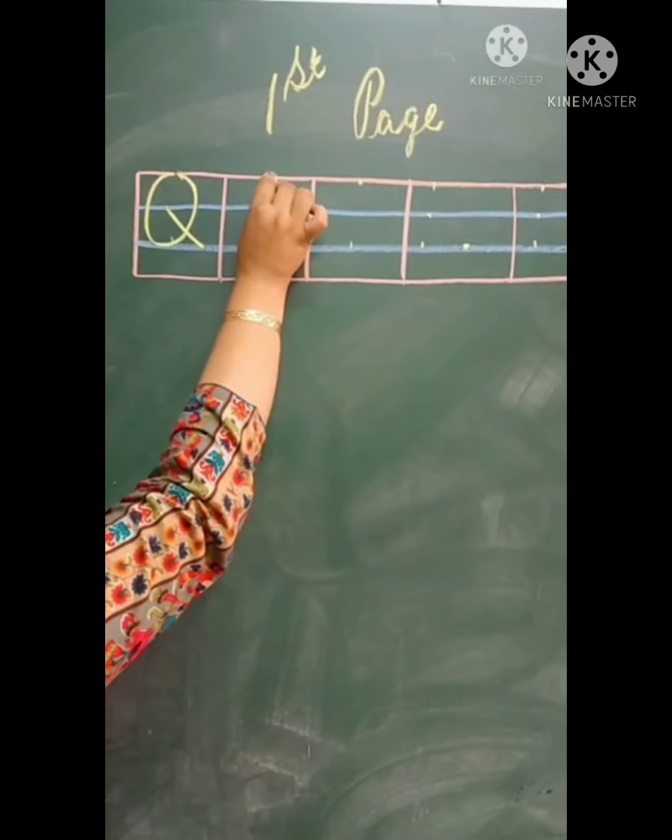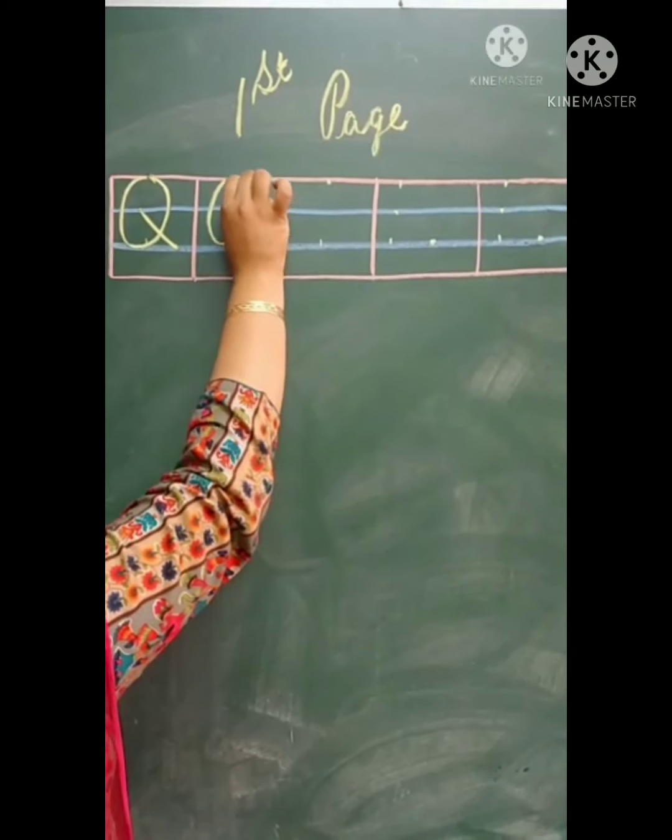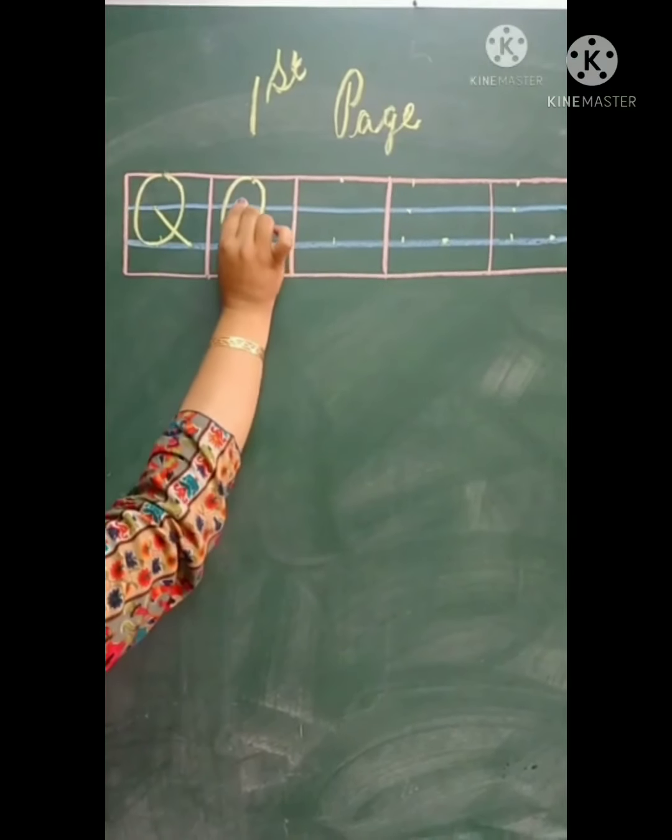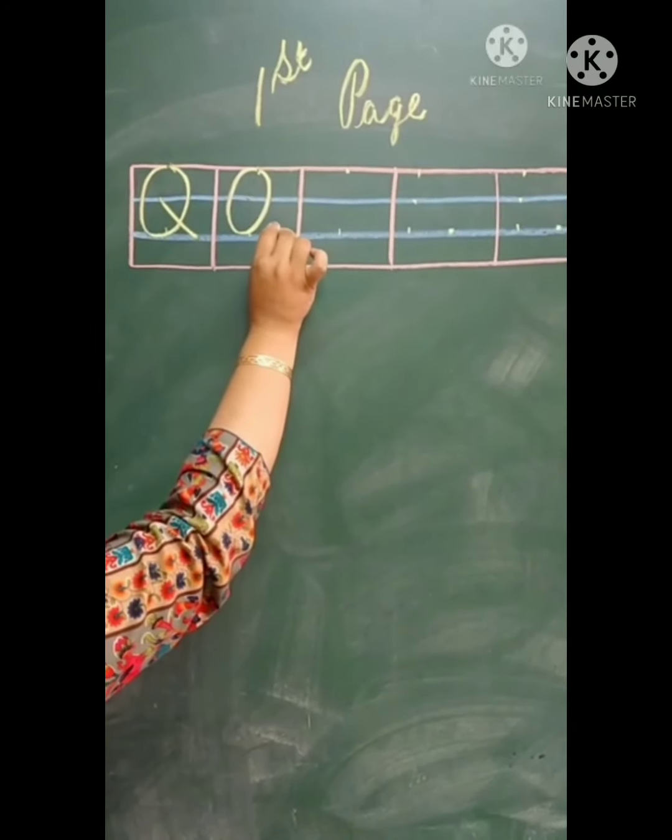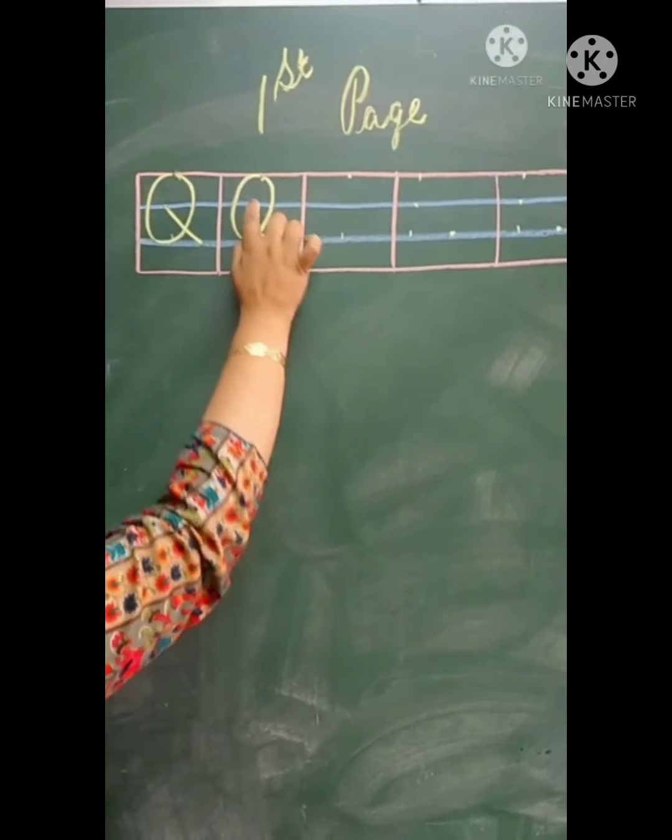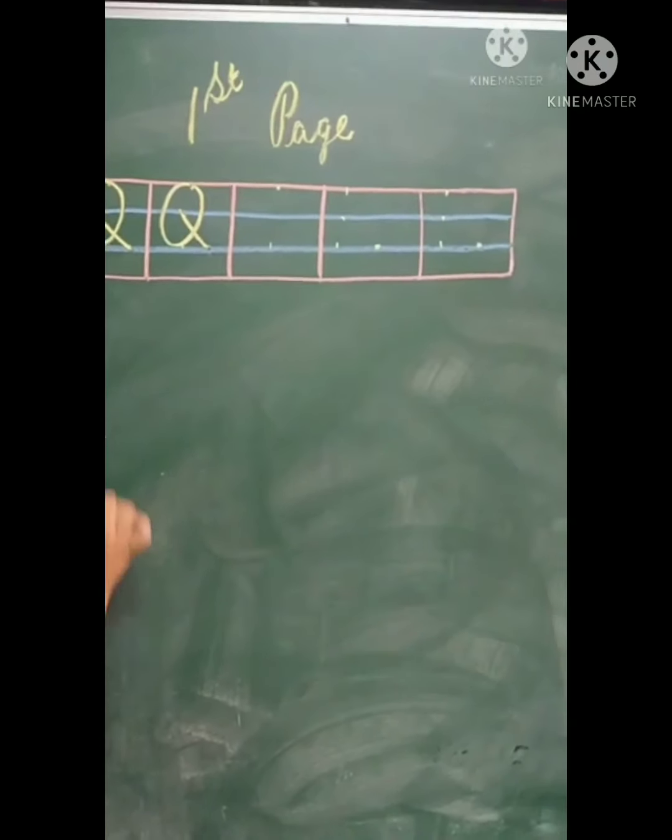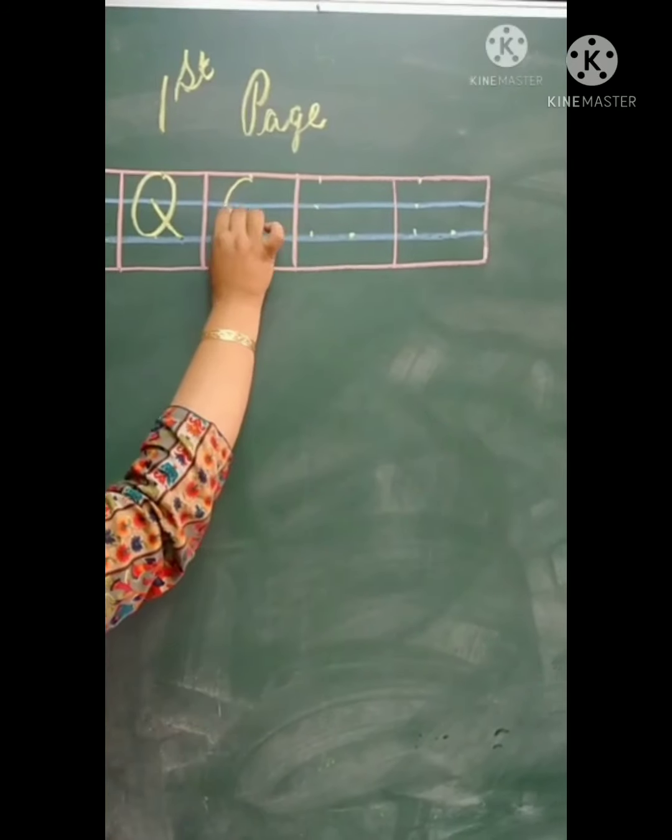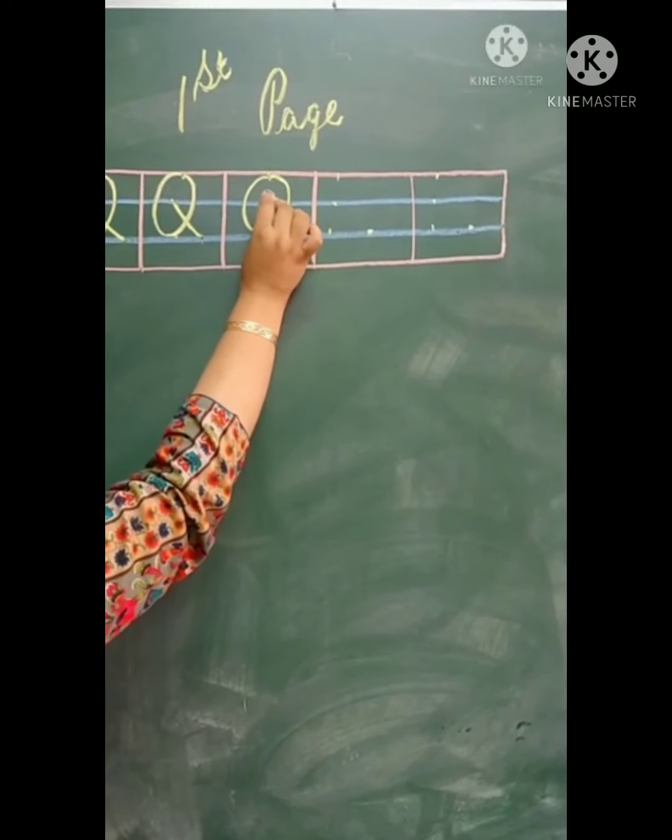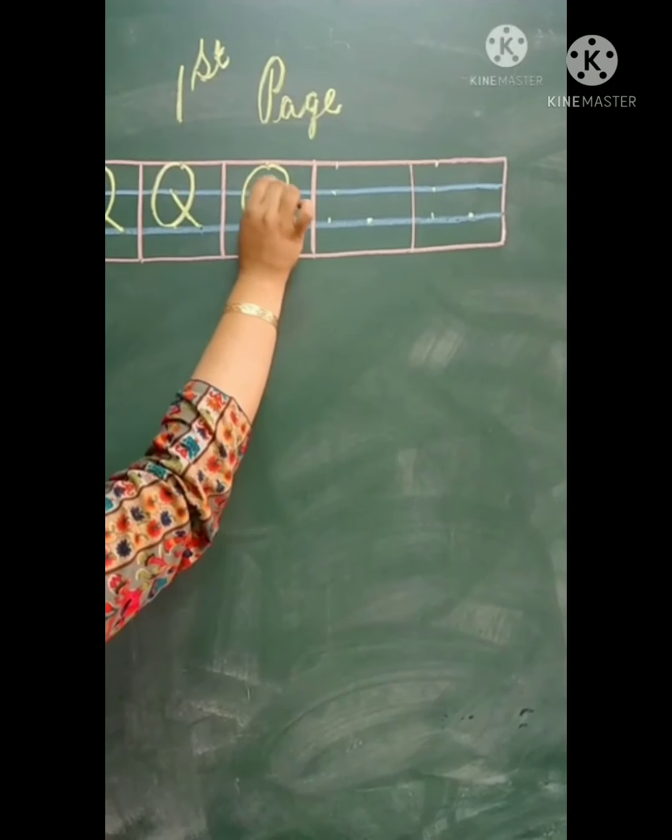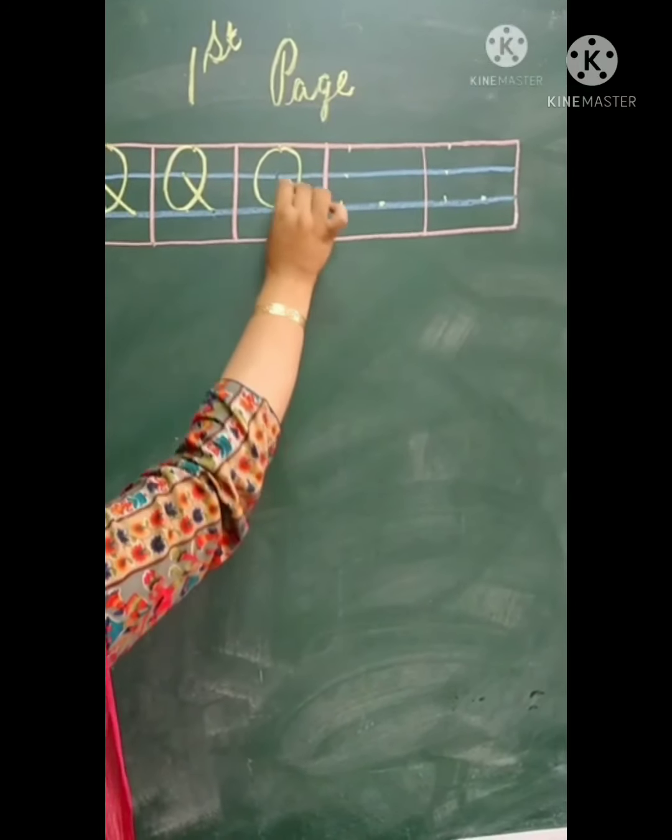Make a circle. Or fir second line pe dot dal na hai aur ek third dot pe line dal na hai. Make slanting line here. Yeh ban gaya Q. Make a circle and then put one dot on the second line and then other dot on the third line.